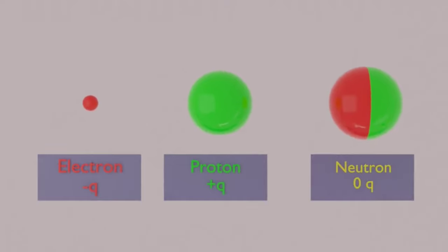Electron is negatively charged particle, proton is positively charged particle and neutron is zero charged particle. Here, the neutron has equal amounts of positive and negative charges in it. That is why neutron has net zero charge in it.